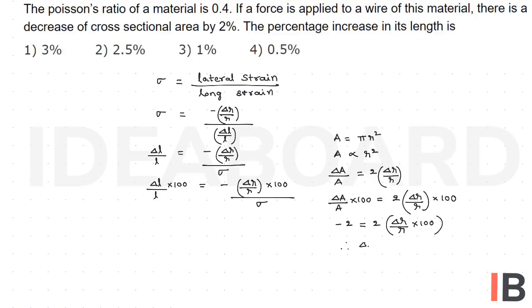Therefore, delta R by R times 100 equals minus 1%. Substituting here, this becomes minus of minus 1 divided by sigma value 0.4, that is 1 by 0.4, which equals 2.5%. The second option is the right option.